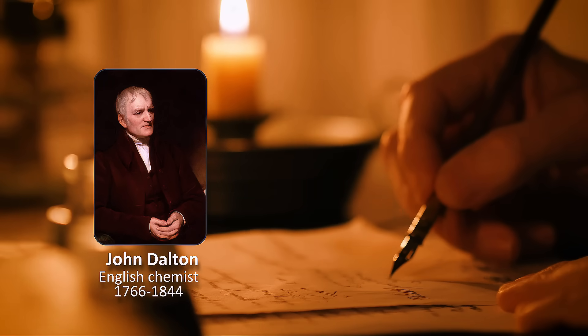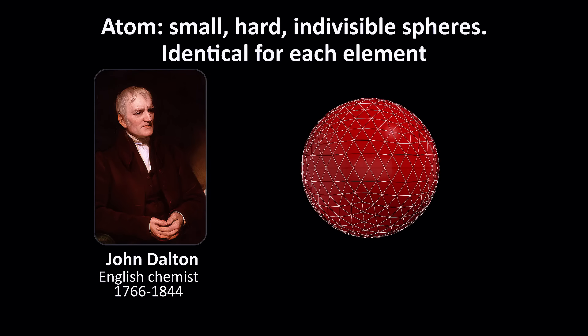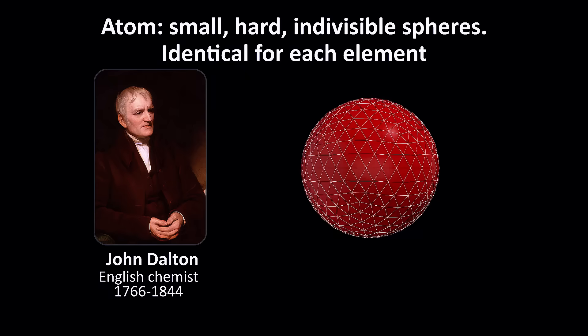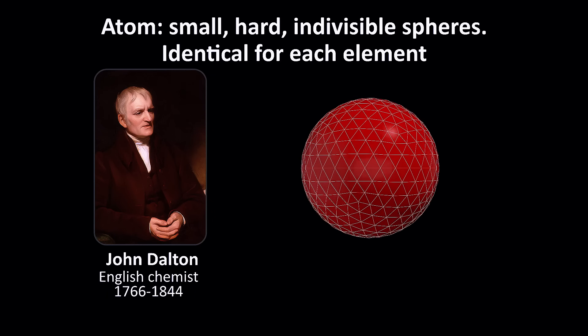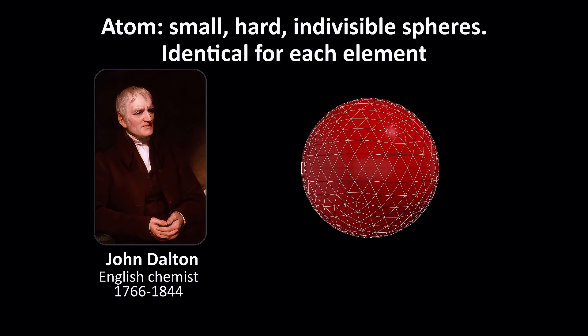Fast forward to the early 19th century, when John Dalton, an English chemist, took the idea further. Dalton described atoms as small, hard spheres that were indivisible, with identical atoms for each element. It was a step forward, but the idea of atoms being indivisible wouldn't hold up for long.